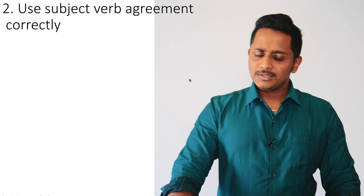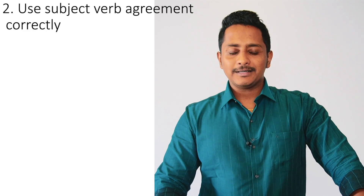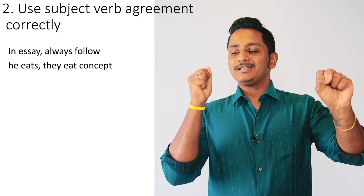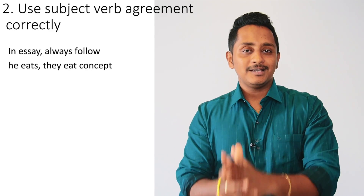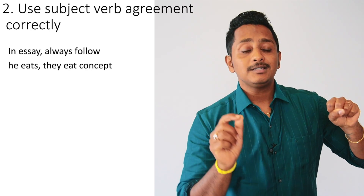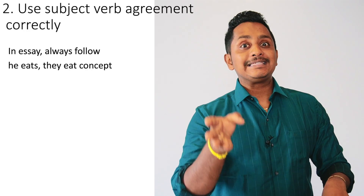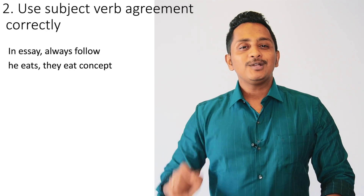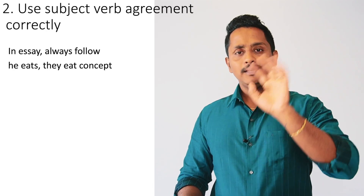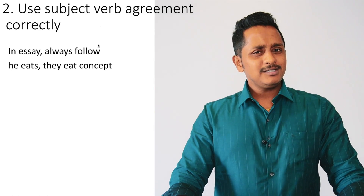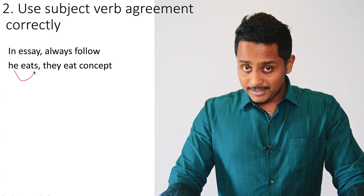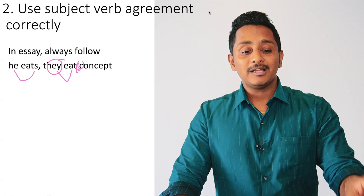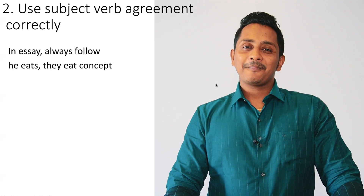Shortcut number two: use subject-verb agreement correctly. Subject is a noun, and the verb must agree with it. In the present tense, a singular noun takes a verb with 's': 'he eats.' A plural noun does not: 'they eat.' Remember — he eats, they eat. This is subject-verb agreement in simple terms.